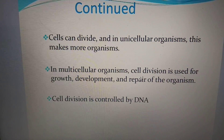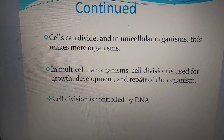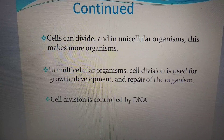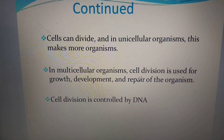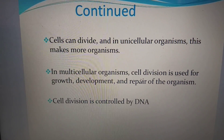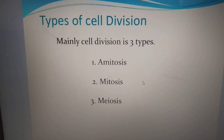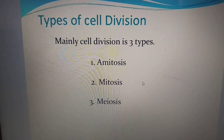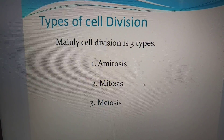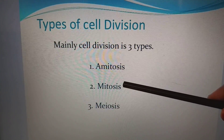Cells can divide, and in unicellular organisms this makes more organisms. In multicellular organisms, cell division is used for growth, development, and repair. Cell division is controlled by DNA. There are mainly three types of cell division: amitosis, mitosis, and meiosis.